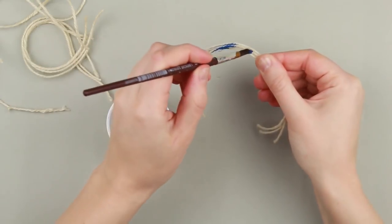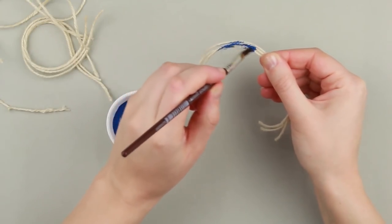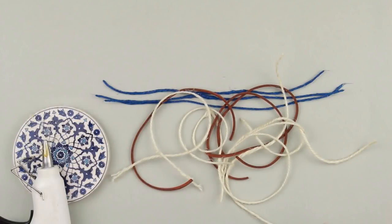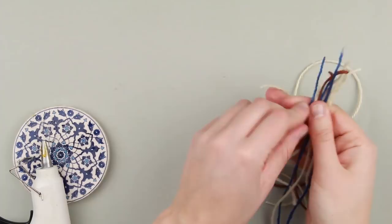Take three rope pieces, paint them blue and let dry. You can use a brush.